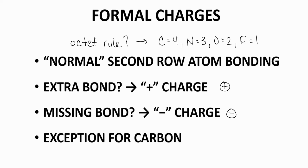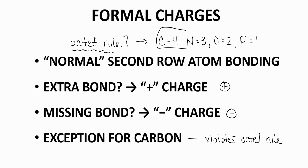Carbon can break this trend, but it only happens if carbon violates the octet rule. Typically by violating, it only has 6 electrons in its valence. Since we're talking about violating the octet rule, technically you could argue this is not an exception to the pattern we see. So let's get started.